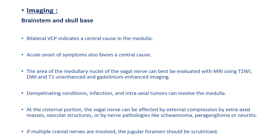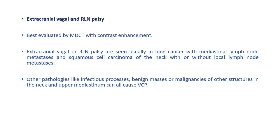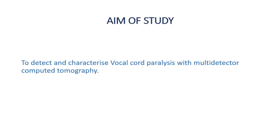If multiple cranial nerves are involved, we should think of any pathology in the jugular foramen. When we come to extracranial vagal and recurrent laryngeal nerve palsy, this is best evaluated by multi-detector CT with contrast enhancement. Extracranial vagal or RLN palsy is seen usually in lung cancer with mediastinal lymph node metastasis and squamous cell carcinoma of the neck with or without local nodes. Other pathologies like infections, benign masses, or malignancies can also cause vocal cord palsy.